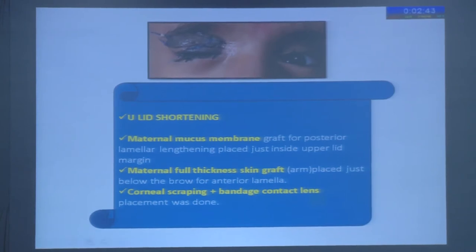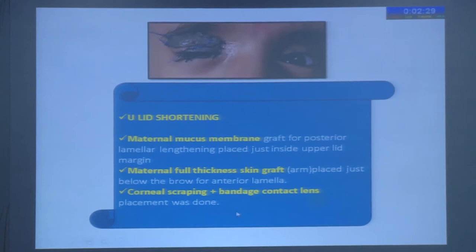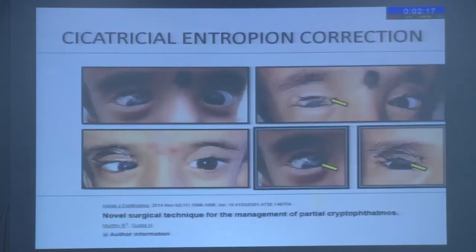As you can see, this is a full-thickness maternal skin graft placed just below the eyebrow to lengthen the anterior lamella; it was taken from the inner aspect of the forearm of the mother. Simultaneously we did a corneal scraping and bandage contact lens placement. We also took a maternal mucous membrane graft and placed it in the posterior lamella just inside the upper lid margin.